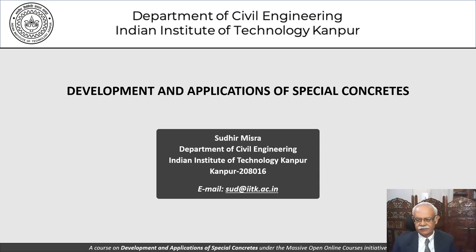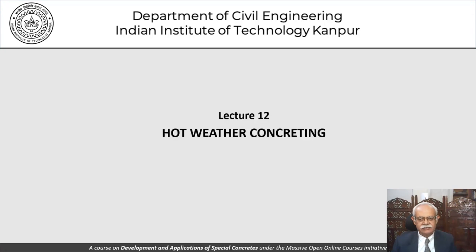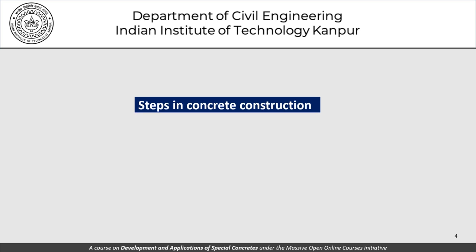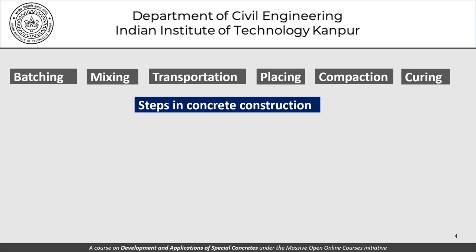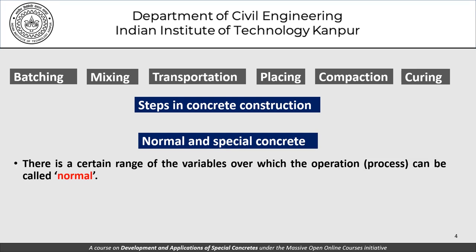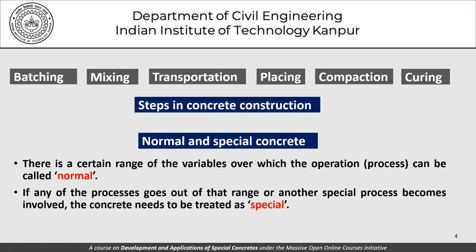Welcome back to another lecture in our series on development and applications of special concretes. Today the focus will be on hot weather concreting. What makes a concreting operation special? We have already seen that there are different steps involved in concrete construction: batching, mixing, transportation, placing, compaction, and curing. There is a certain range of variables over which the operation can be called normal, and if any process goes out of that range, the concrete needs to be treated as special.